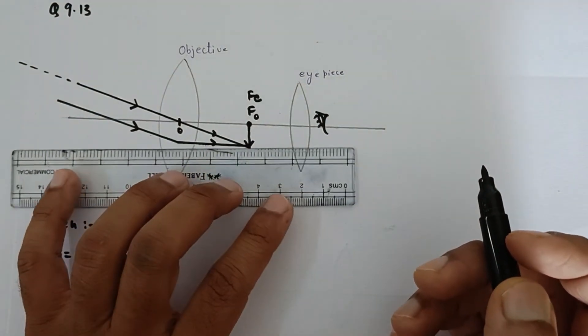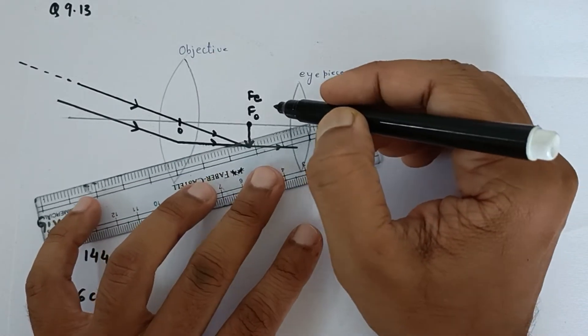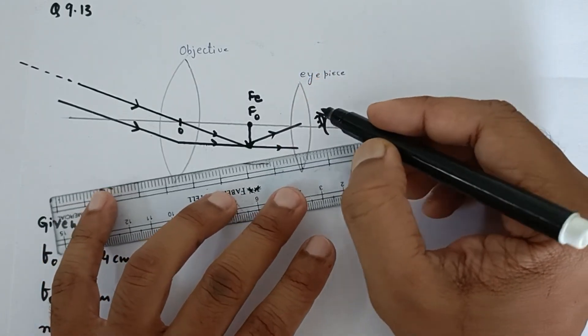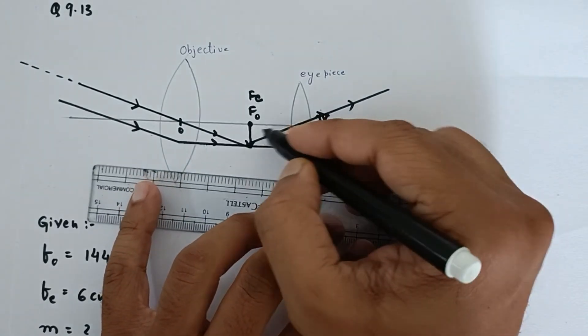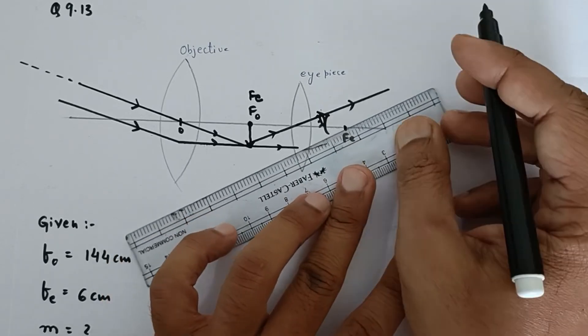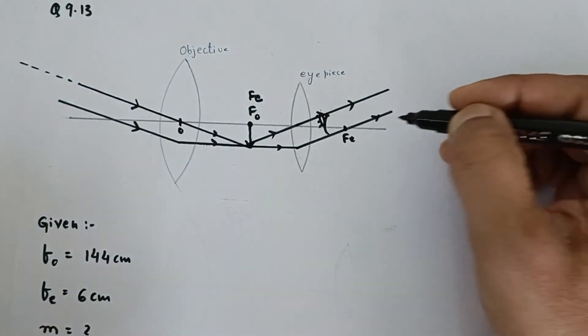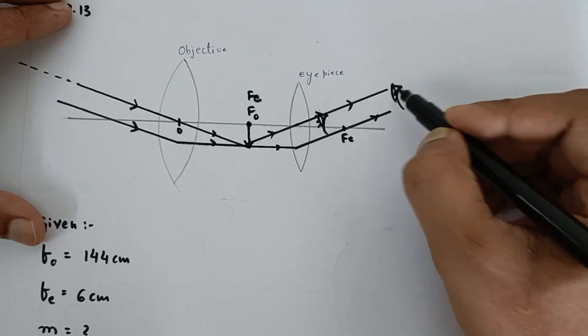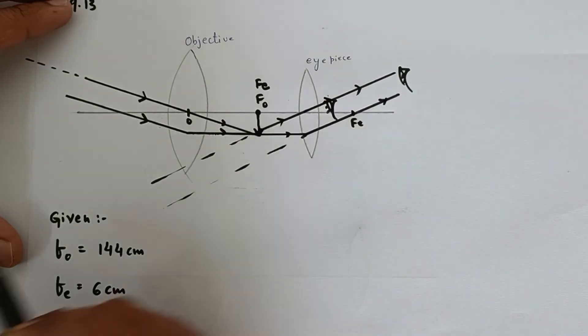So we can say that there are rays which are going to come like this, and then the focus of the eyepiece is here, and these rays are parallel. Finally, when the eye is here, or even here, because the eye is situated near to the eyepiece, we find the final image to be at infinity.